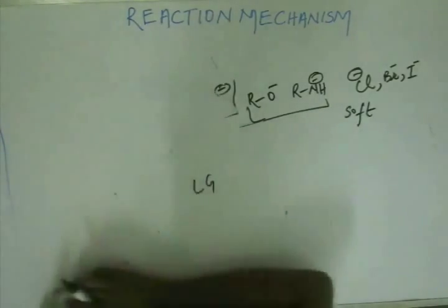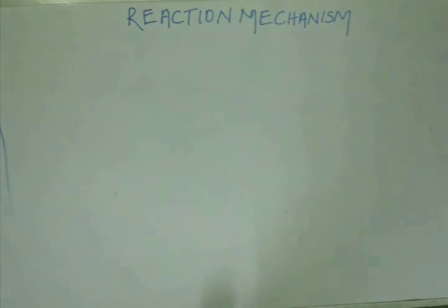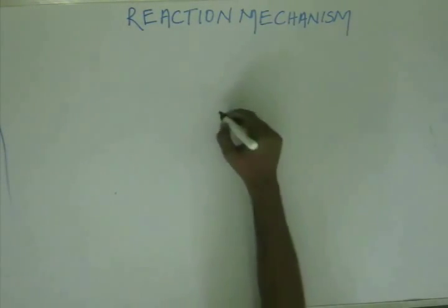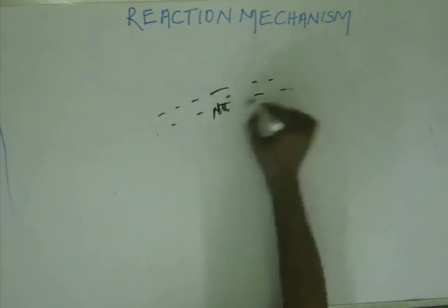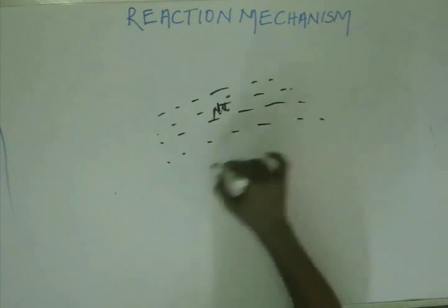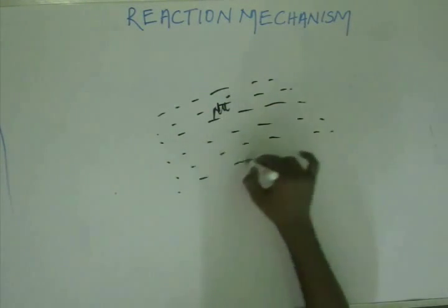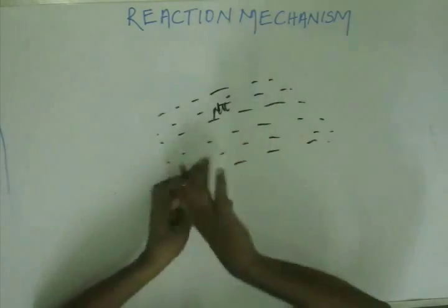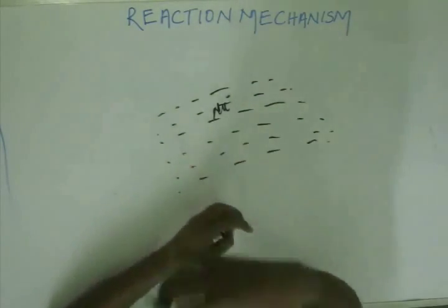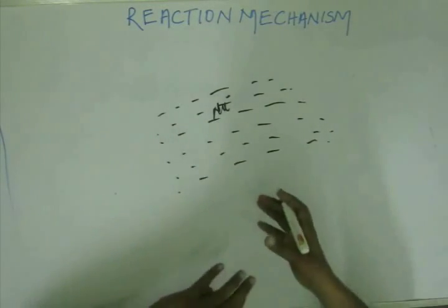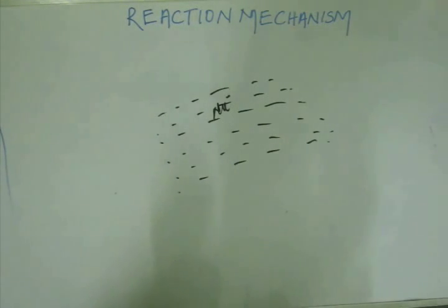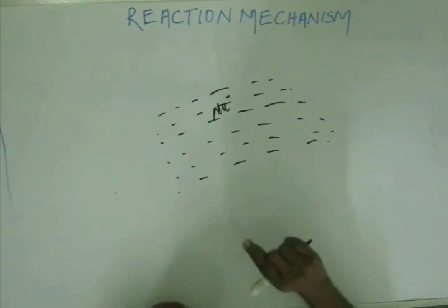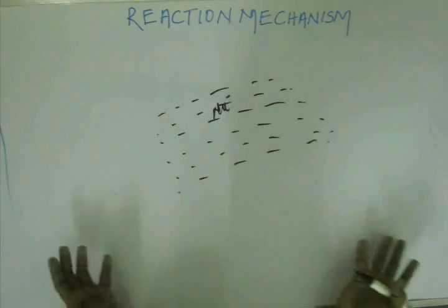How does solvent affect the rate of reaction of an SN2 reaction? If you have a nucleophile (Nu-), this nucleophile is surrounded from all sides by solvent molecules. There is a cage of solvent covering that nucleophile layer by layer. This surrounding of a reagent by solvent molecules is called solvation.